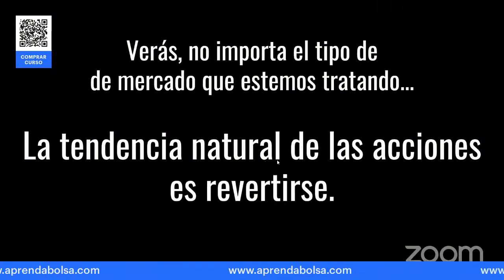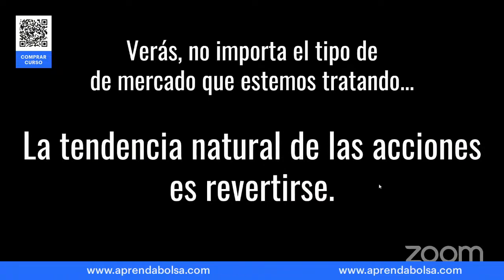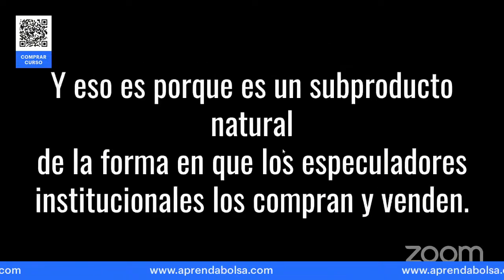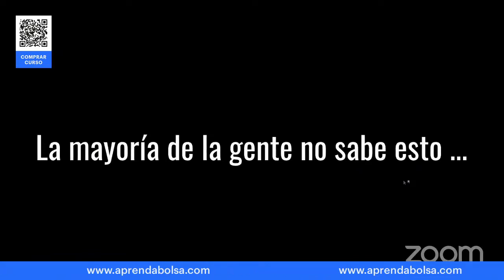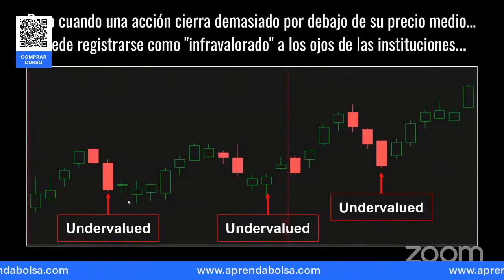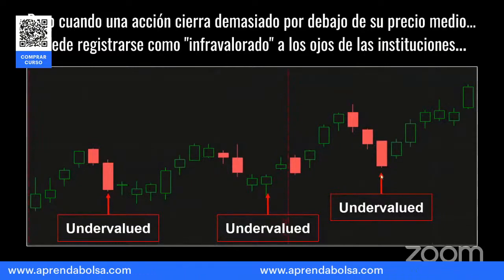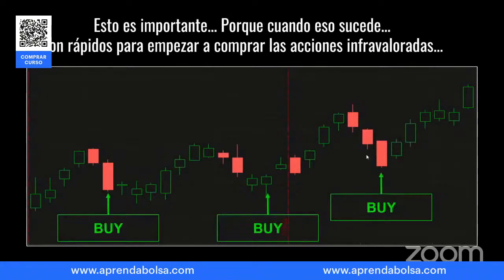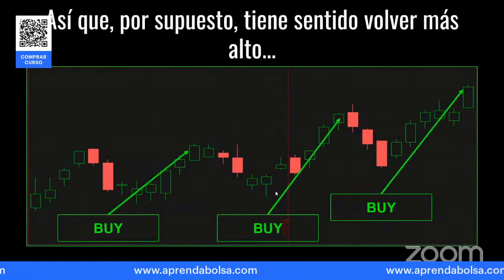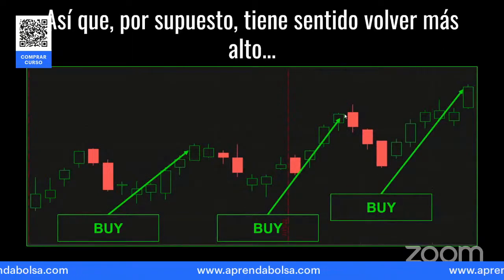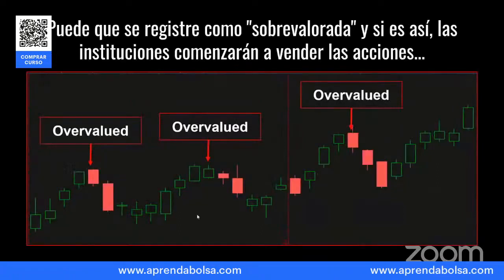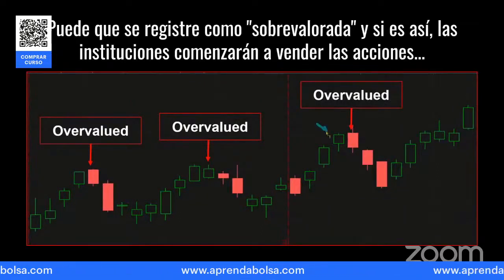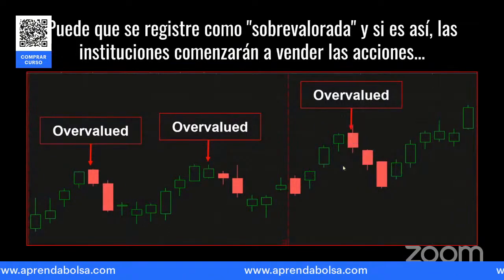No importa el tamaño o tipo de trader — la tendencia natural de las acciones es revertirse, y por eso este indicador está hecho para esa misma cosa. Está hecho para el modo natural de los especuladores institucionales que compran y venden. La mayoría de la gente no sabe esto, pero cuando ven que está barato, ahí es donde compran las instituciones. Ellos no compran después de una subida como el novato — compran después de una bajada, y venden cuando el novato está comprando. Lo mismo ocurre cuando se pone demasiado alcista: cuando ya subió, ellos venden.